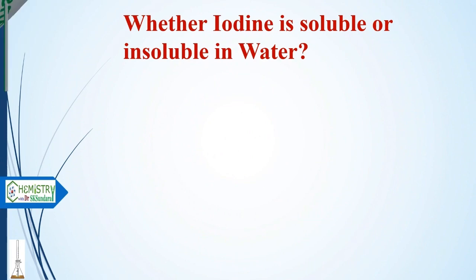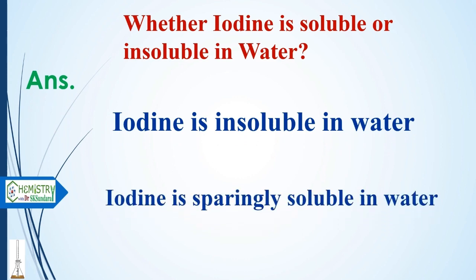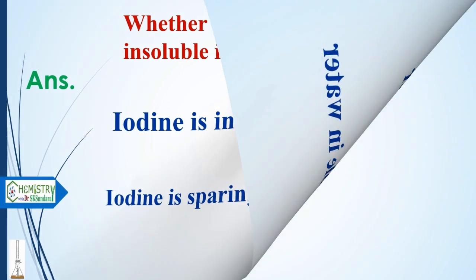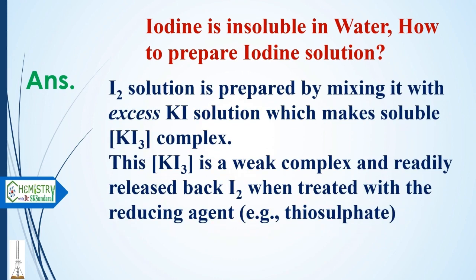Is iodine soluble or insoluble in water? Iodine is sparingly soluble in water — very little iodine dissolves and most remains insoluble. So how do we prepare an iodine solution? Iodine solution is prepared by dissolving it in excess potassium iodide solution, which forms a soluble KI₃ complex. This KI₃ complex is a weak complex and readily releases I₂ back when treated with a reducing agent such as thiosulfate.